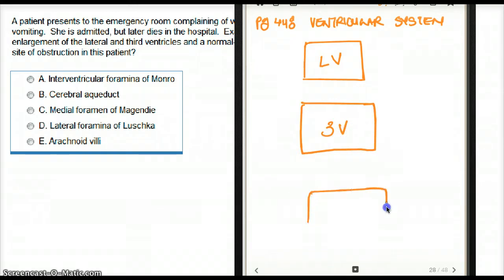and let's say this is the fourth ventricle. Obviously this is the cerebral aqueduct, and this is where the obstruction is.